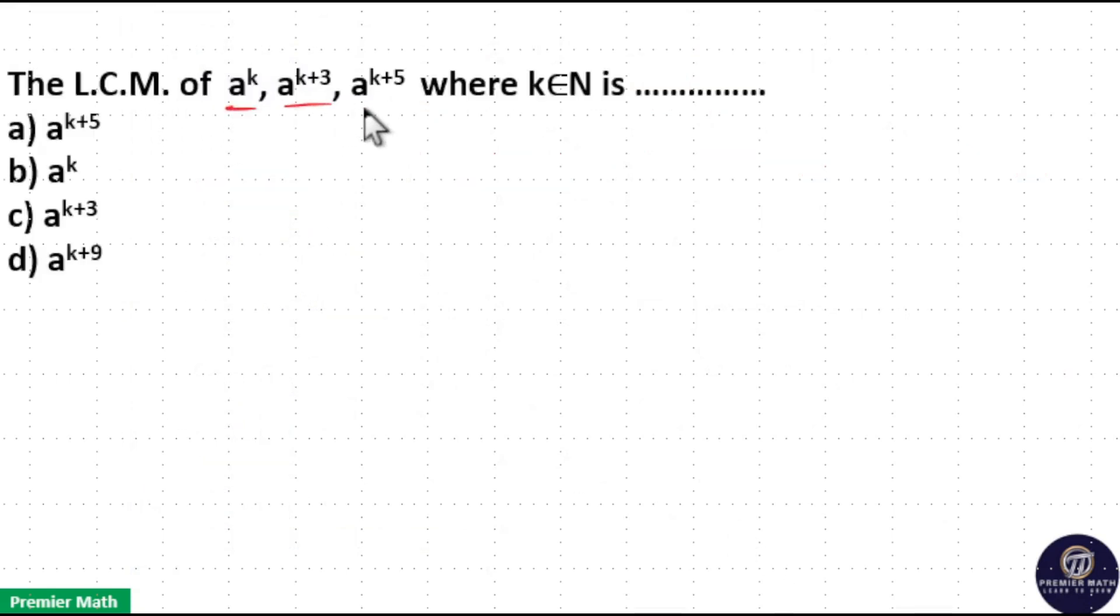LCM of A raised to K, A raised to K plus 3, A raised to K plus 5, where K element of natural numbers is... Here LCM of exponents means number with the greatest power should be the LCM. Here K plus 5 is the greatest among K, K plus 3, and K plus 5. So option A is your answer.